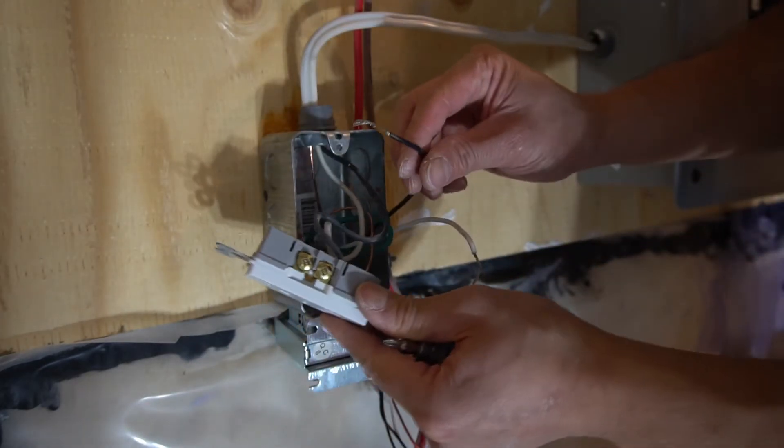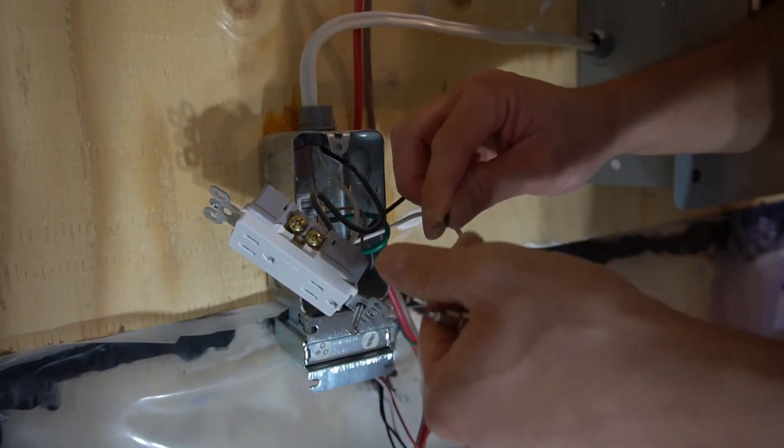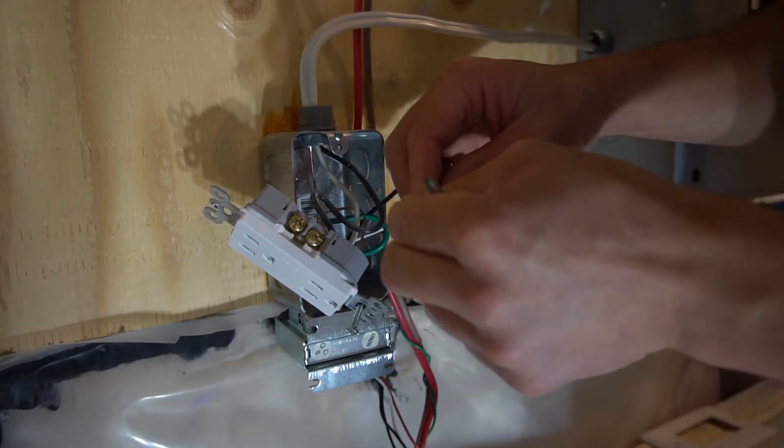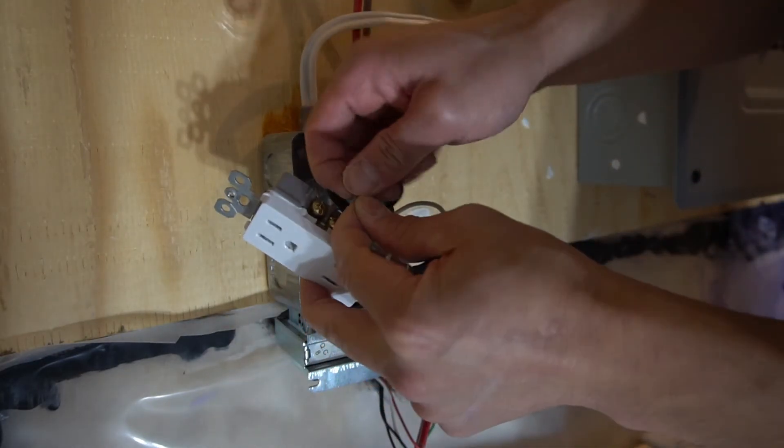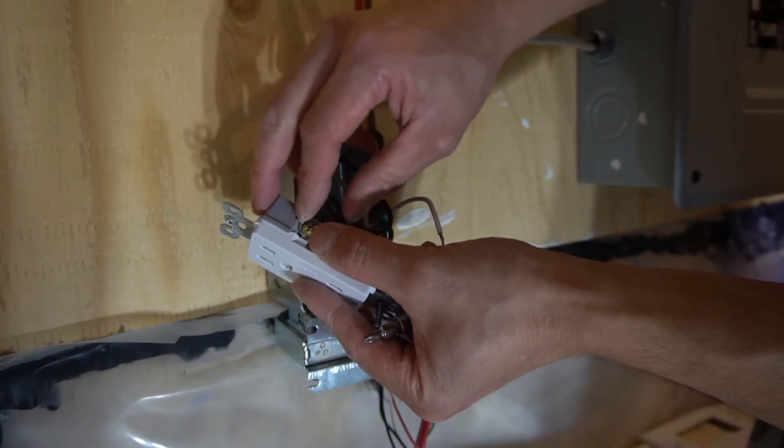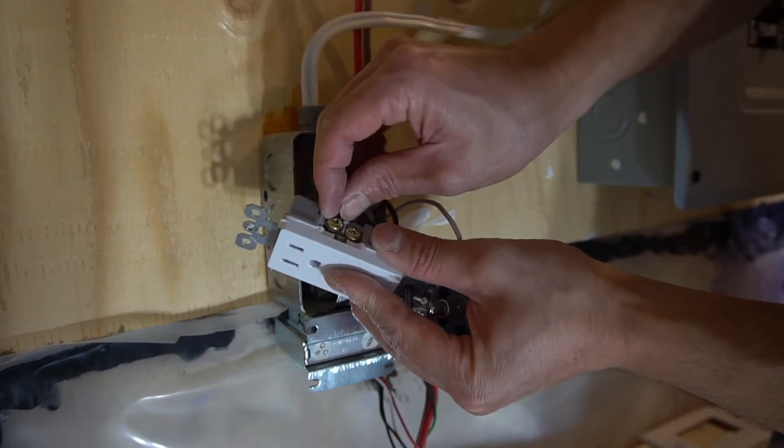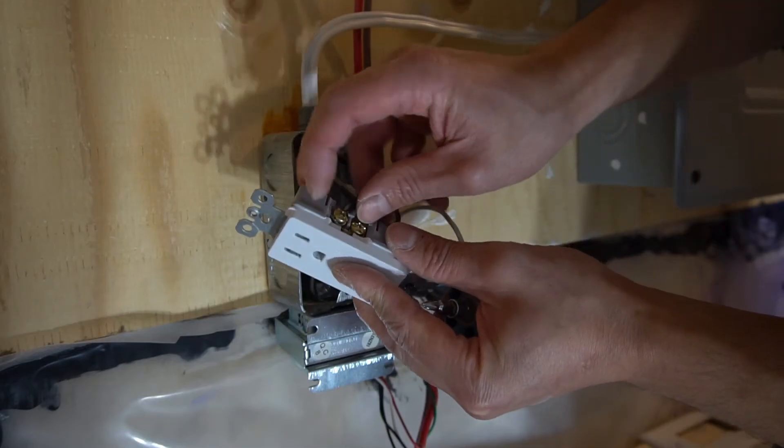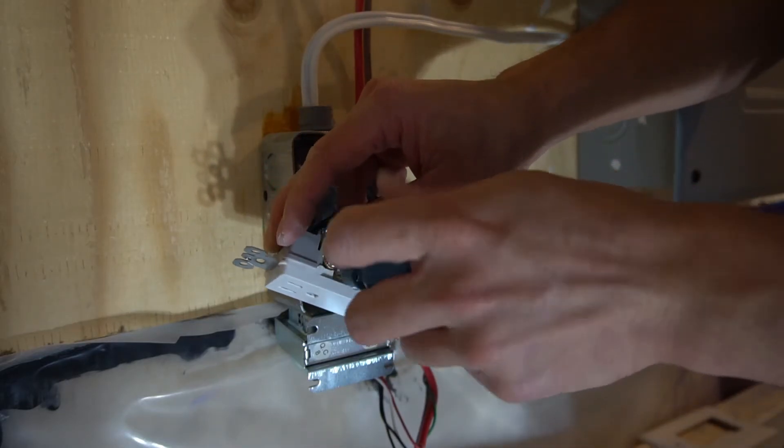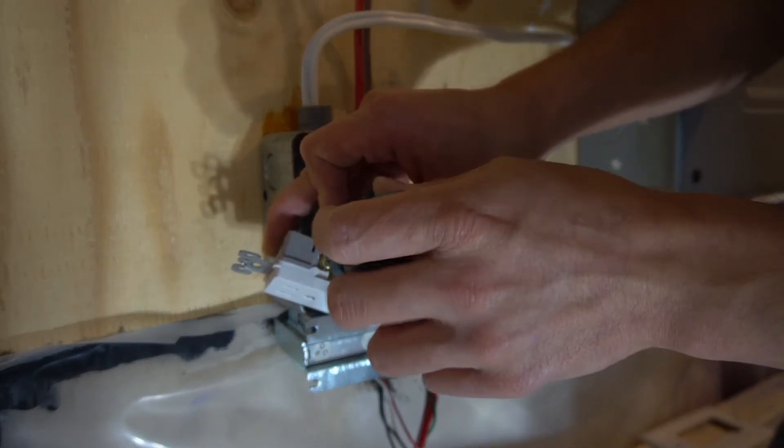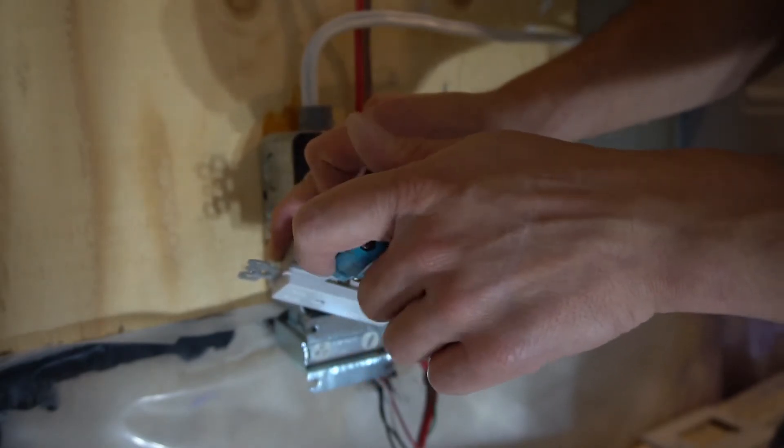Next, I will connect the black wires to the hot side. To the brass screw of the plug. Make sure the wire is wrapped clockwise around the screw.